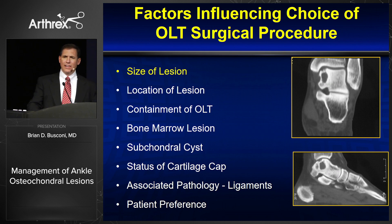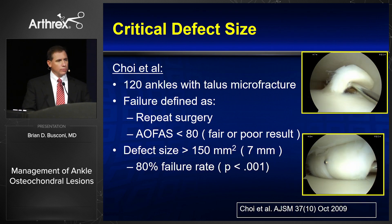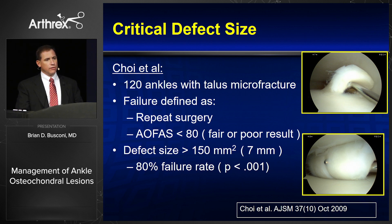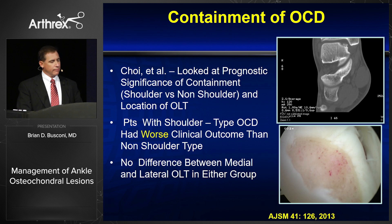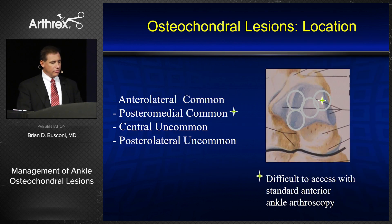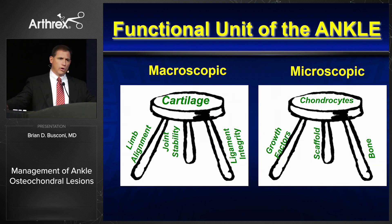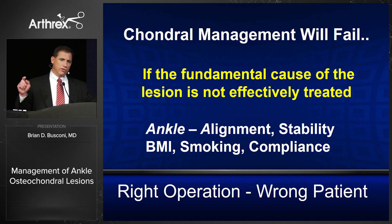Factors influencing my choice of procedure include the size, location, and containment — much like any other articular cartilage talk. For the talus specifically, it's been shown that full-thickness cartilage lesions greater than 7 millimeters do poorly with just marrow stimulation, so we need a better technique. Uncontained lesions have a poorer prognosis than contained lesions, and anterolateral and posteromedial locations are the most common. We must address both the macroscopic and microscopic problems of the functional unit — taking care of only one will effectively result in treatment failure.